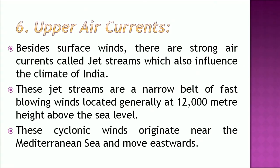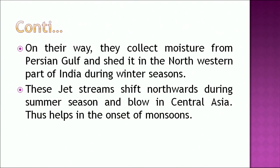Besides the surface winds, there are strong air currents called jet streams which also influence the climate of India. These jet streams are a narrow belt of fast-blowing winds located generally at 12,000 metres height above sea level. These cyclonic winds originate near the Mediterranean Sea and move eastward. On their way, they collect moisture from the Persian Gulf and shed it in the northwestern part of India during winter. These jet streams shift northward during summer and blow in central Asia, which helps in the onset of monsoon.